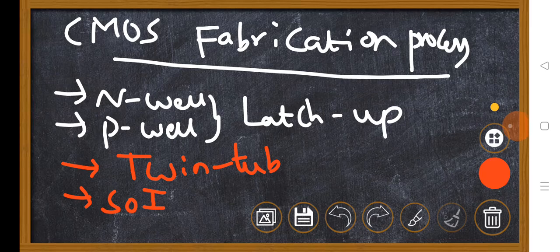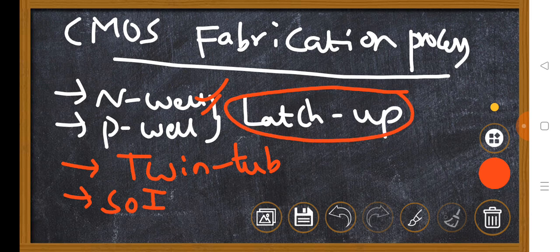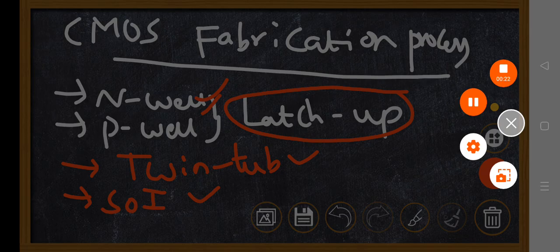Welcome back. Today we will discuss the drawback present in well fabrication process. Latch-up is the drawback present in well fabrication process. To overcome latch-up in the CMOS fabrication process, we use Twin-tub and SOI. In the last class we discussed the well fabrication process. In this class we will discuss the drawback and its remedies — Twin-tub and SOI.